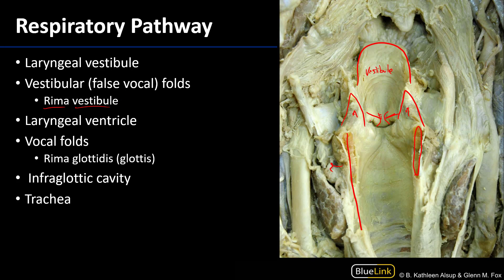Below these folds is the laryngeal ventricle. Distal to the laryngeal ventricle is another set of folds, formed by ligaments going from the vocal processes of the arytenoid cartilages out to the thyroid cartilage, with the thyroarytenoid vocalis muscle in there as well. These are the vocal folds, often referred to as the vocal cords — the structures which vibrate during phonation. The space between them is known as the rima glottidis.